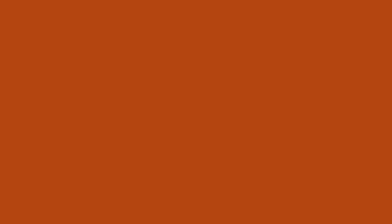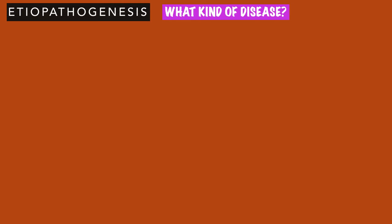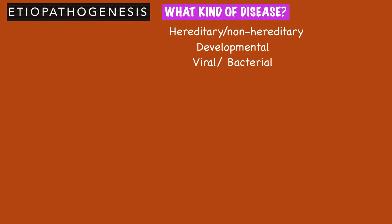The third heading is etiopathogenesis. Under etiopathogenesis, the first thing to write is what kind of disease this is — is it hereditary or non-hereditary, a developmental disorder, viral, bacterial, or autoimmune in nature? Once you have mentioned that, the next thing is what is the cause of the disease — a genetic cause, a virus, or a specific habit that causes it.